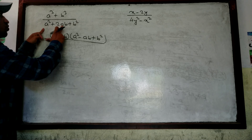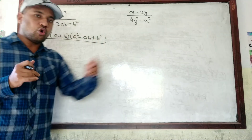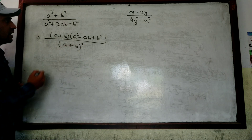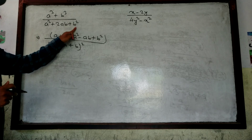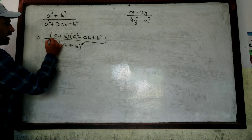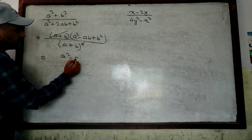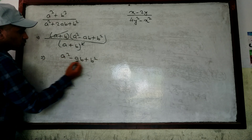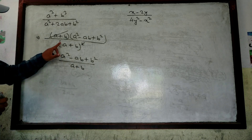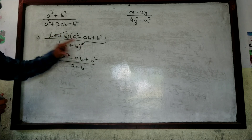The denominator contains a² + 2ab + b², which is the formula for (a+b)². So the (a+b) in the numerator and the (a+b) from (a+b)² cancel — the square reduces to one factor. What remains is (a² − ab + b²) divided by (a+b). That is the answer.